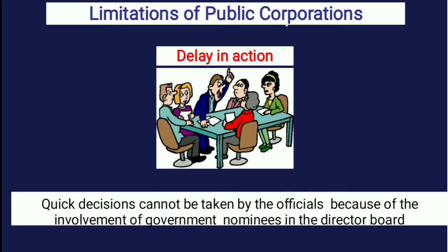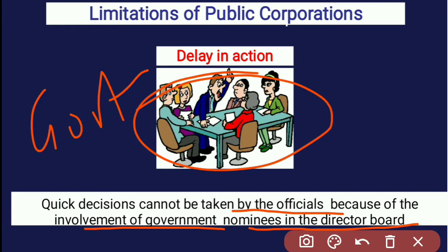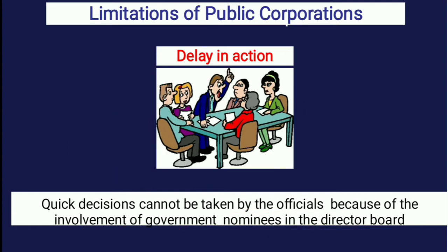Next is delay in action. In public corporations, decisions can be delayed and activities are not timely, because quick decisions cannot be taken by officials. Due to the involvement of government nominees on the board of directors, decision-making is influenced by government recommendations. This means timely action is difficult, and decisions tend to be delayed. This is one of the limitations of public corporations.